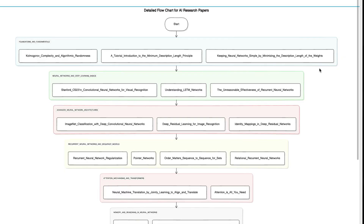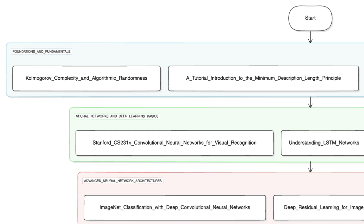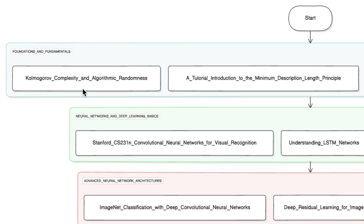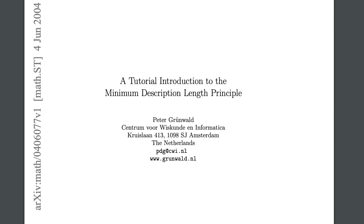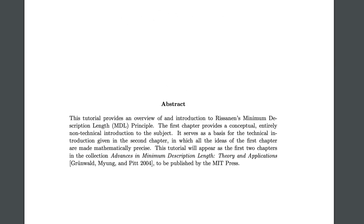Let's look at this entire roadmap. Starting with the first category: Foundations and Fundamentals. Here you have to understand the theoretical underpinnings of information, complexity, and efficient representation in AI. The first resource is a book on Kolmogorov complexity and algorithmic randomness — to grasp the fundamental limits of compression and its relation to intelligence. Then we have a tutorial introduction to the Minimum Description Length principle, to learn how to balance model complexity with data fit.